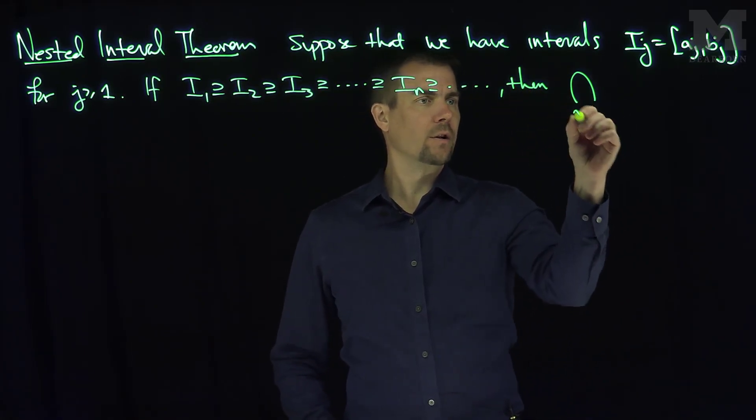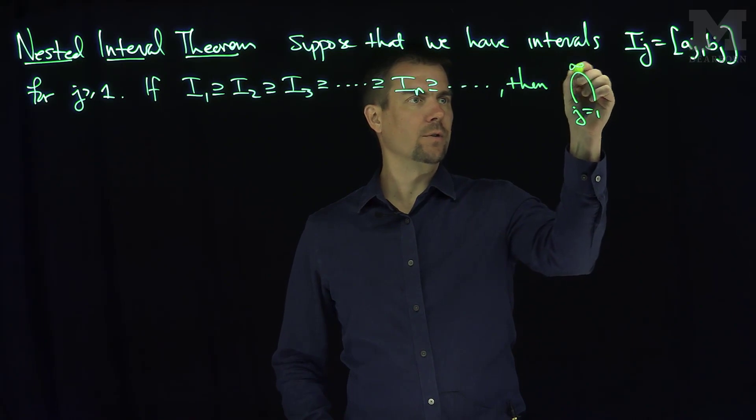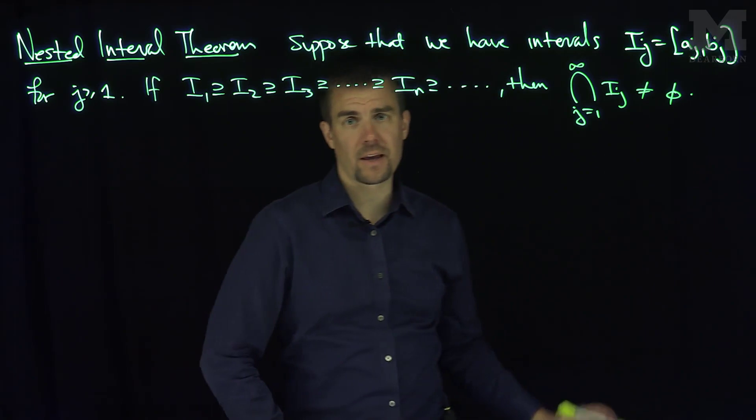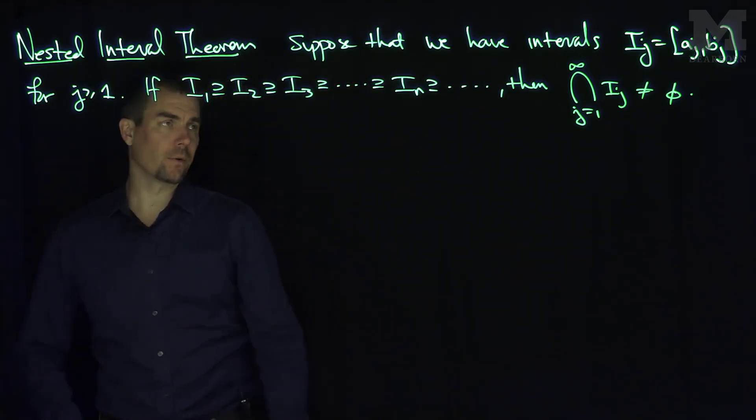then the intersection of all of these intervals, j goes from one to infinity of Ij, is not the empty set. So there's something in this intersection. This is the Nested Interval Theorem.